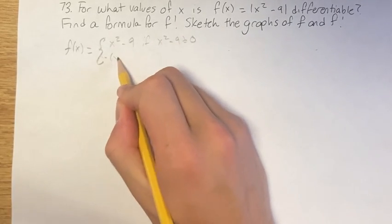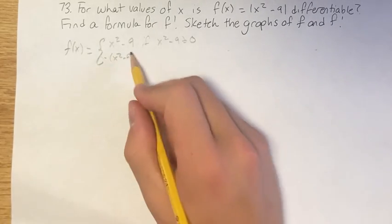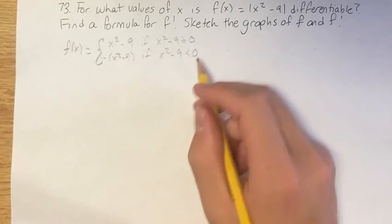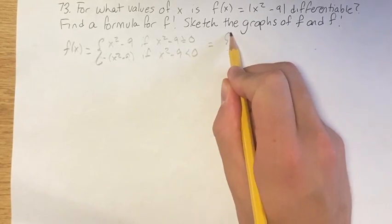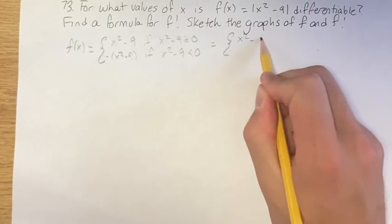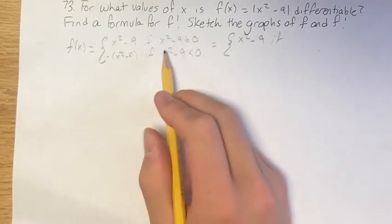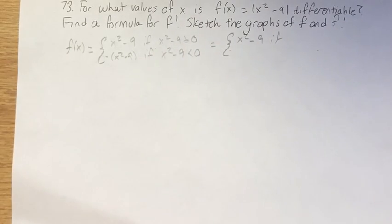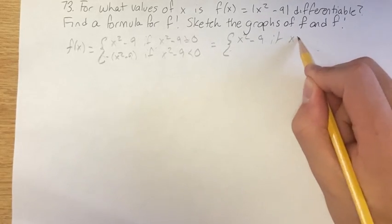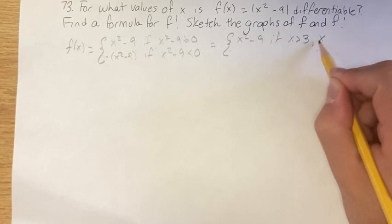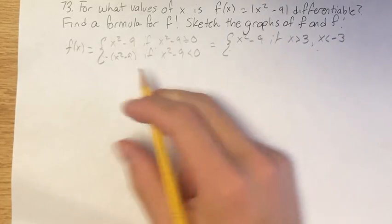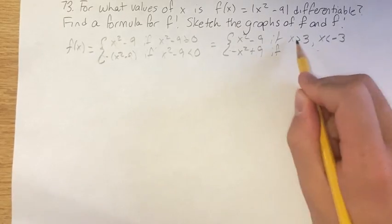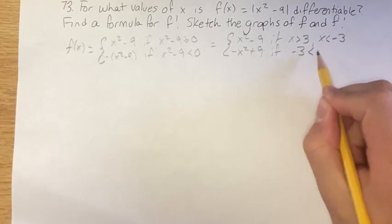It's going to be negative of x squared minus 9 — the negative value of itself — if the thing inside the absolute value is less than 0. Simplifying, we get f of x equals x squared minus 9 when x squared minus 9 is greater than or equal to 0, which means x is greater than 3 or x is less than negative 3. And it equals negative x squared plus 9 (distributing that negative) if x is in the range negative 3 to 3.